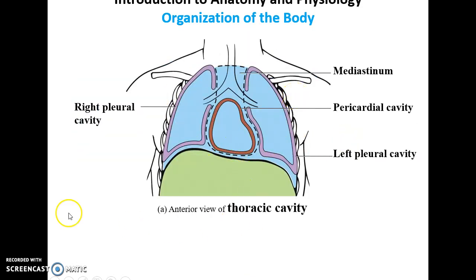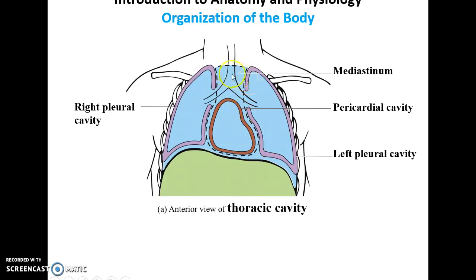Looking more closely at the thoracic cavity, it's broken down into four smaller cavities: the right and left pleural cavities, which basically surround the right and left lungs; the pericardial cavity, which surrounds the heart; and the mediastinum, which includes everything between the lungs — the heart, part of the trachea, part of the bronchi, the aorta, and so forth.